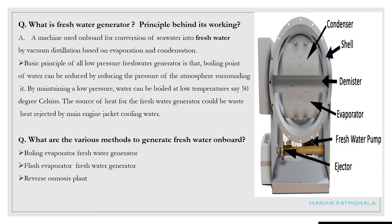The next question is: what are the various methods to generate fresh water onboard? The methods are: boiling evaporator fresh water generator, flash evaporator fresh water generator, and the reverse osmosis plant.